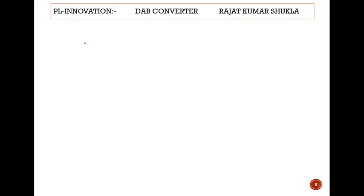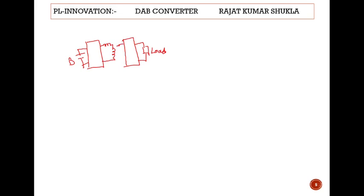Here there is a bridge, and this is another bridge where it is connected to the battery, and there is a load. This is a load and this is a bridge. It is connected through one interface inductance because I'm assuming the transformer is ideal here, and this inductance is responsible for the power transfer. You can limit this power using this inductance, so the inductance value should be proper. I have already discussed that dual-active bridge converter circuit.